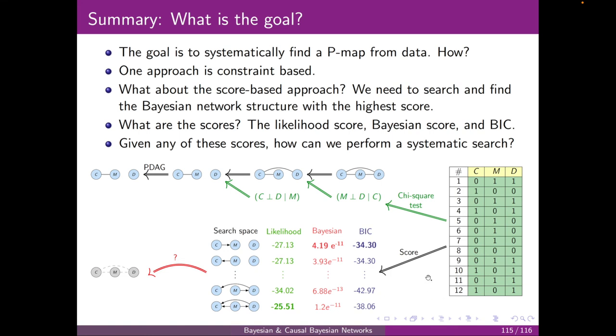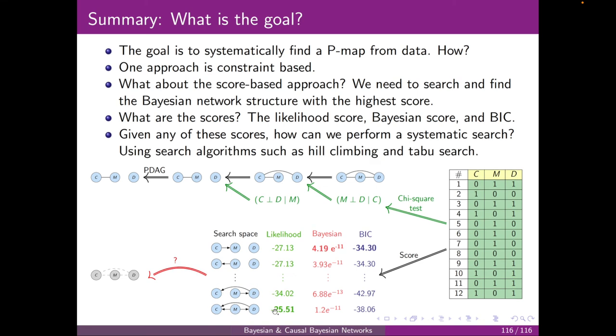Now, to the summary, we already saw that we can have a number of scores like the likelihood, Bayesian, and BIC to perform the constraint-based algorithm. The question is, given any of these scores, how can we perform a systematic search? We don't want to exhaustively search all of these. We want to perform a systematic one and obtain the optimal one. And the answer is that we can perform a local search, such as the hill climbing and taboo search, to obtain the optimal one in this way. Thank you.